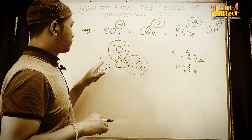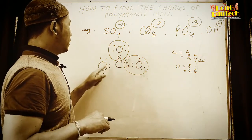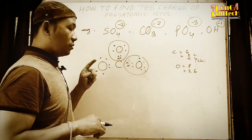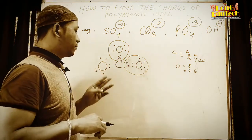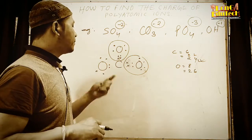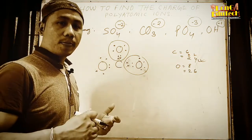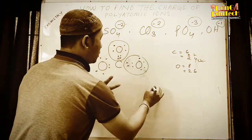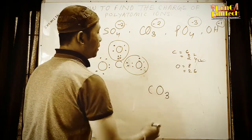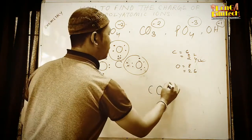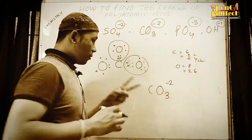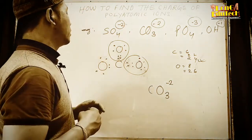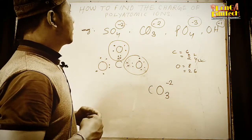After sharing, some oxygens still need two more electrons to reach the octet configuration, making the compound unstable on its own. Because it requires two electrons, the charge of carbonate CO3 is minus two. This is how we find the charge of polyatomic ions. You can try phosphate and others yourself.